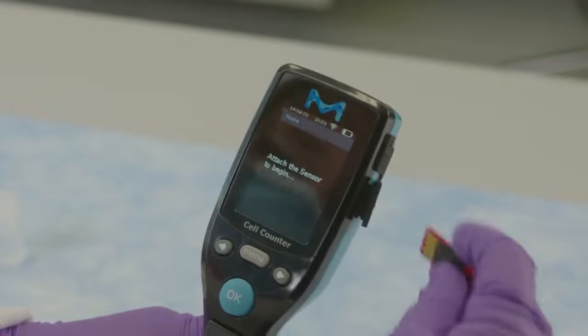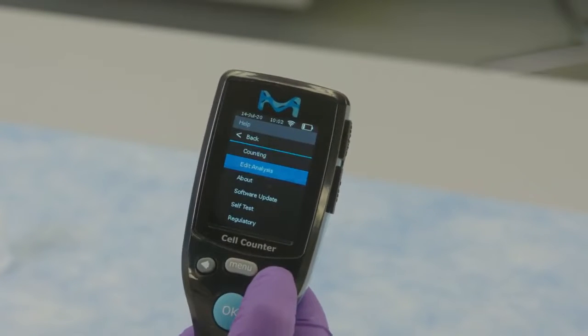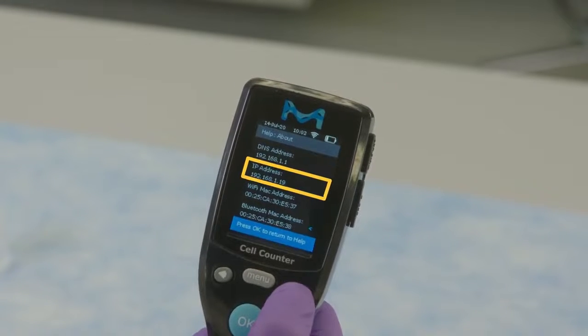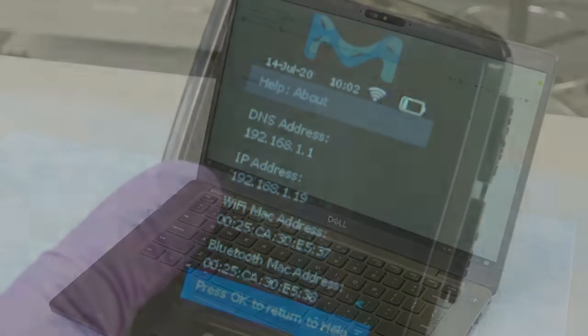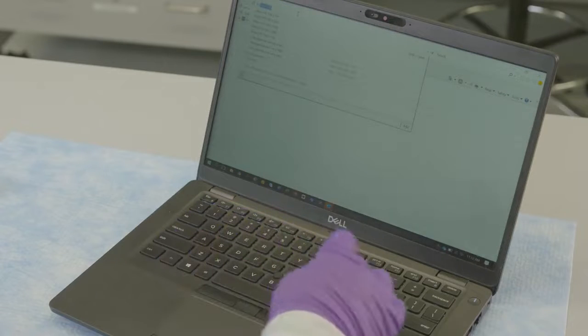Obtain the SEPTOR 3.0 IP address. From the main menu, select help, about, and scroll to find numbers. In our case, it's 192.168.1.19. Confirm the SEPTOR 3.0 is connected to the same Wi-Fi network as the computer.